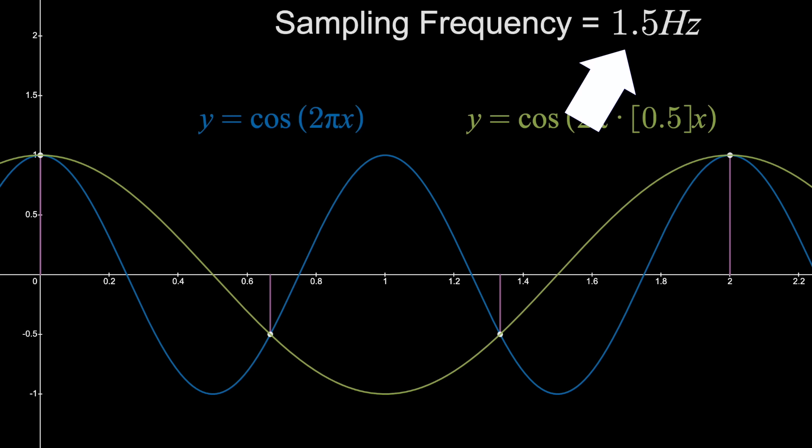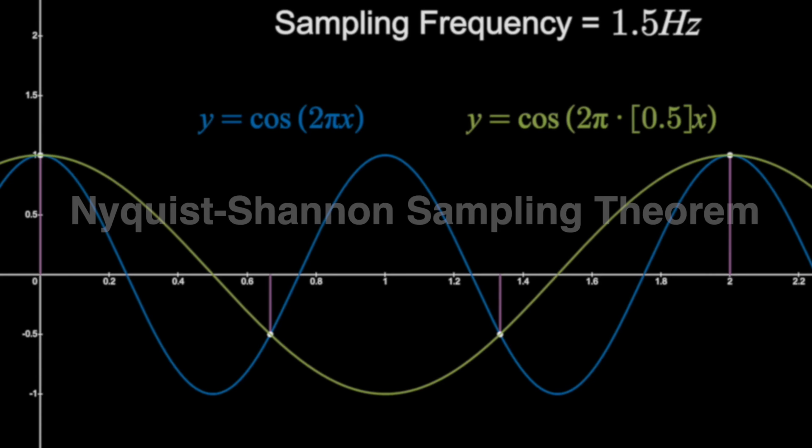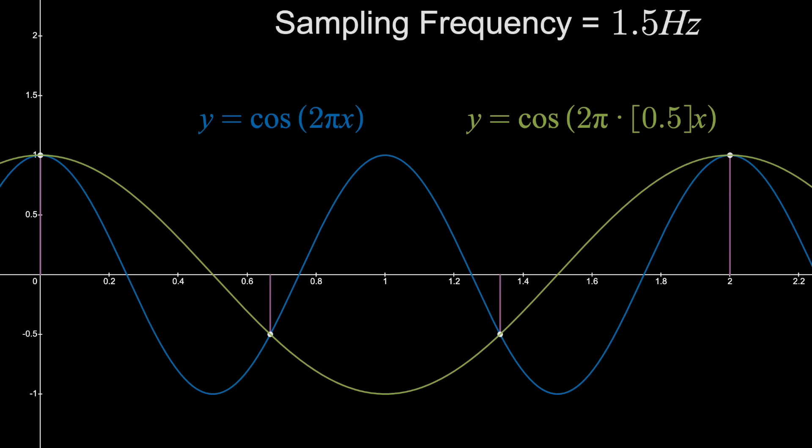What we just saw is basically the idea behind the Nyquist-Shannon sampling theorem, which says you have to sample your signal at a rate faster than twice the highest frequency in your original signal to avoid distortion.